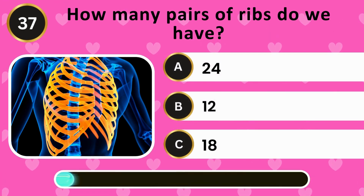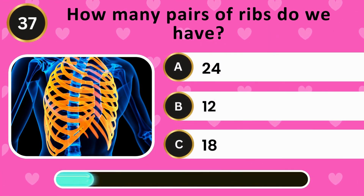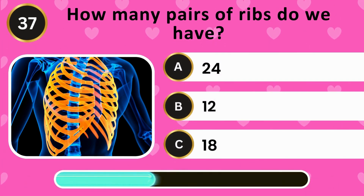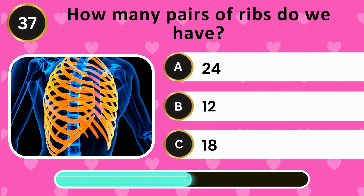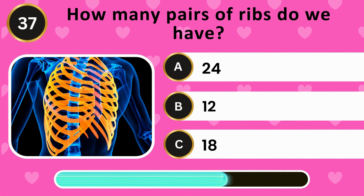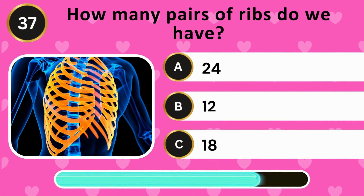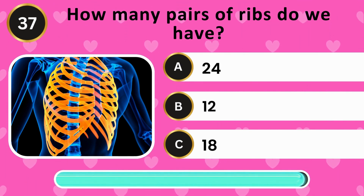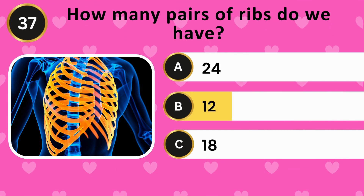How many pairs of ribs do we have? 24, 12, 18. The answer is 12.